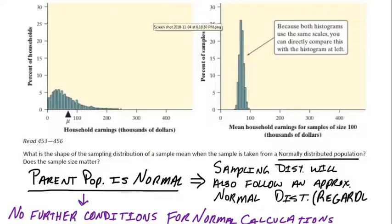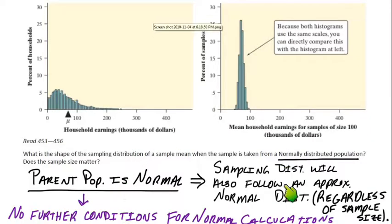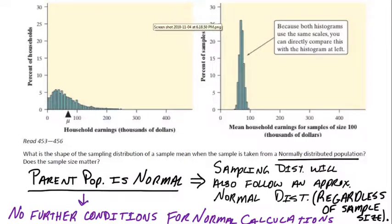That is regardless of sample size. If you come from normal parents, I'm going to trust that the sampling distribution is normal. If you come from skewed parents, we have to check a condition or two to make sure that the sampling distribution will actually end up being normal.